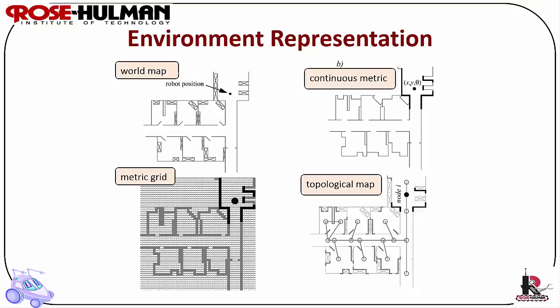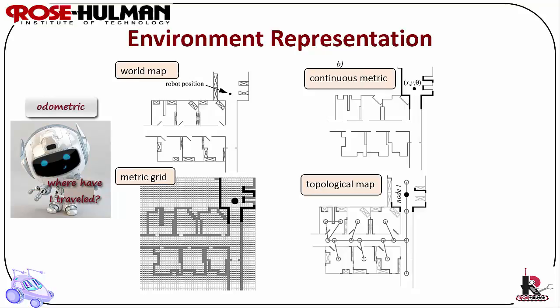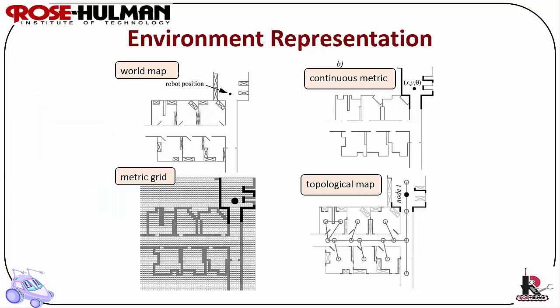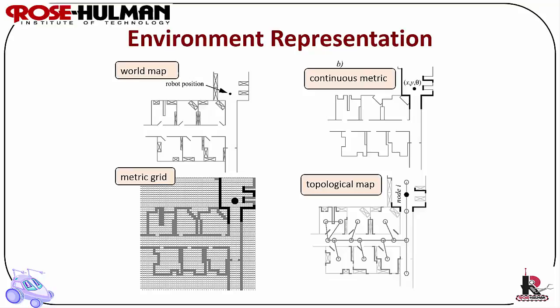The robot may use an odometric path to recall the route traveled. The robot may use a landmark-based path using salient features of the environment. The robot may use a landmark-based map which tells the robot what to do at each landmark regardless of order. A collection of landmarks with links is called a topological map. The robot may recall a maze by drawing it using exact lengths of corridors and distances to walls — this is a metric map. There is also a discrete version of that which we call a metric grid.